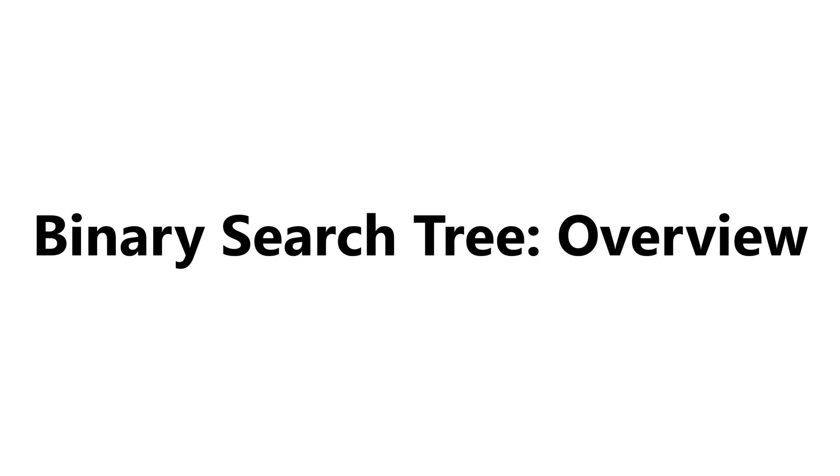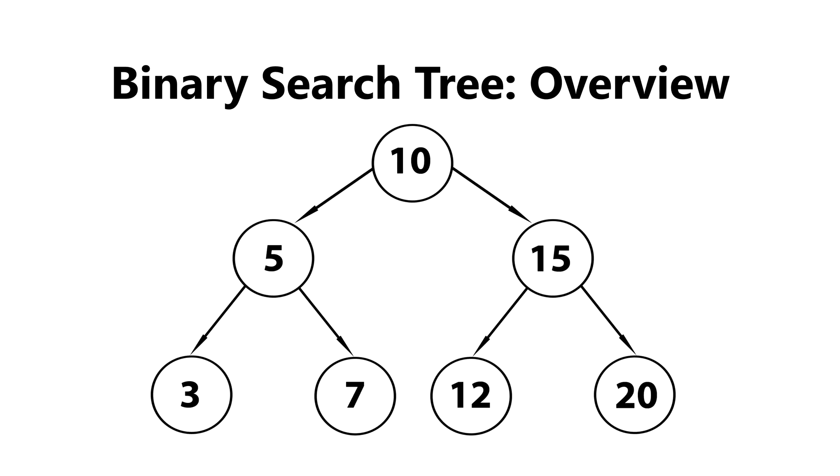So first, let's go over some tree terminology. Let's say we were given the following tree, for example. These circles are called nodes, and the nodes contain data. This node has 10 in it, this node has 5 in it, and so on. Now, these nodes are connected by these lines, and these lines are called edges. An edge is a link between two nodes.